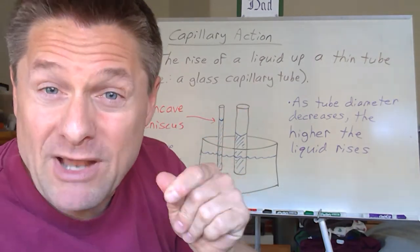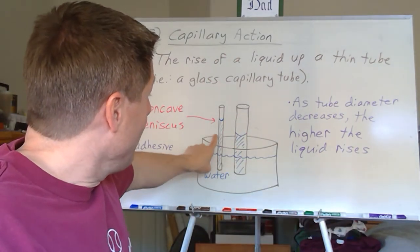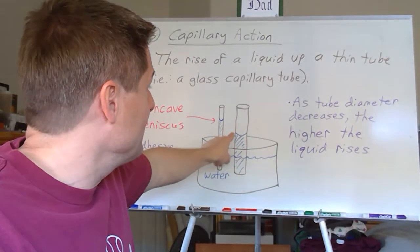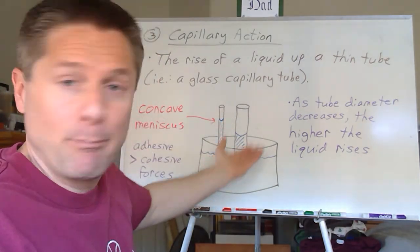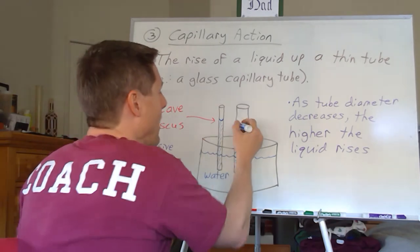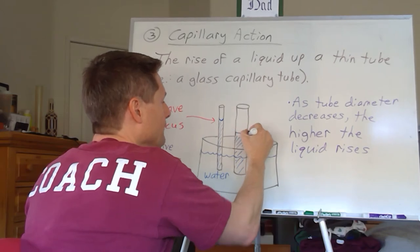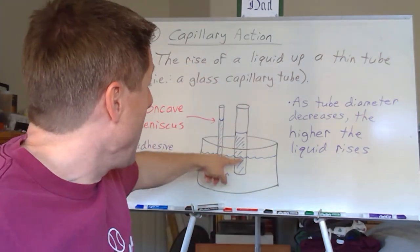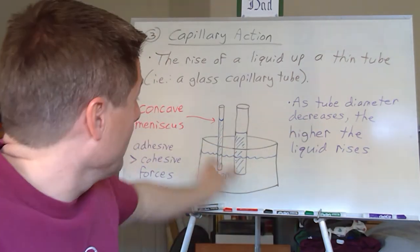Atmospheric pressure pushes the liquid up to compensate for that pressure difference below the meniscus. If the capillary tube has a wider diameter, there's less contact between the liquid and the glass surface, so it doesn't pull up quite as high and the meniscus is less pronounced. Conversely, as the diameter of the capillary tube decreases, the water level rises higher. The narrower the tube, the more dramatic the capillary rise.